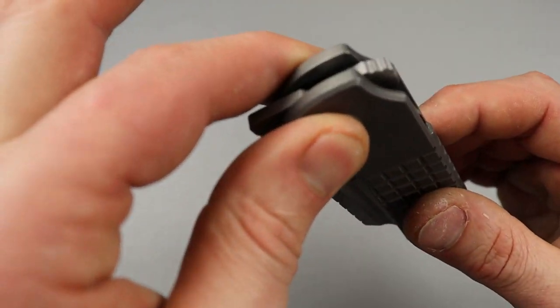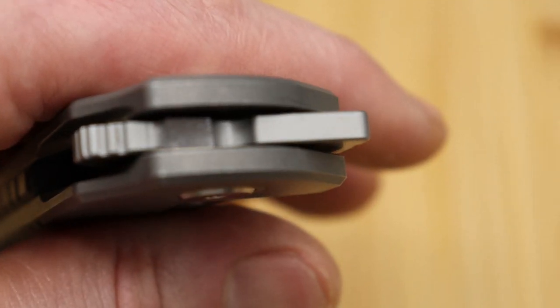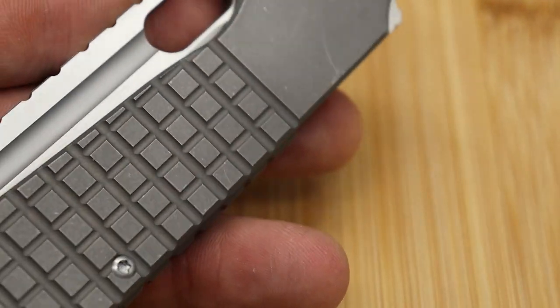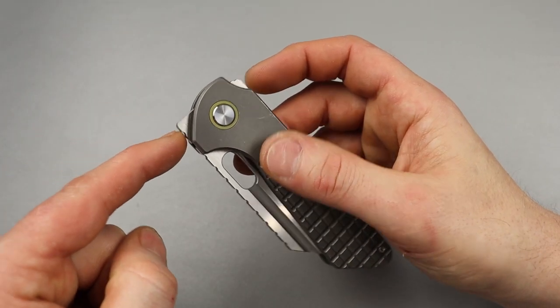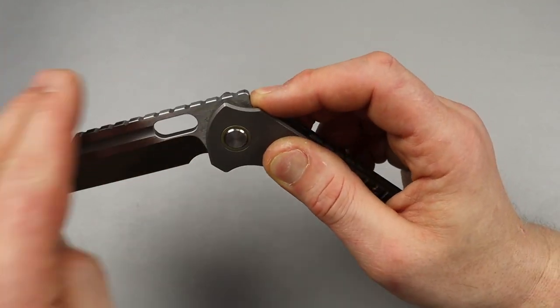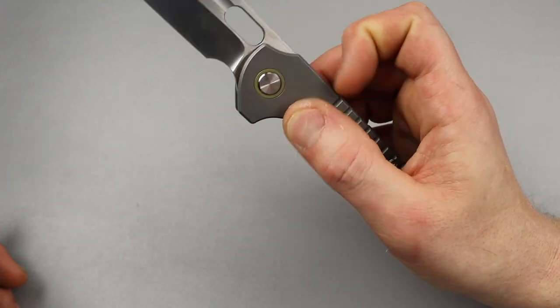Then you have the flipper tab, which has great jimping on this flipper. You have to light switch it though, because just like most flippers that have a front flipper, if you push button it, the front flipper will come around and hit you and it'll just stop. So you have to light switch it.